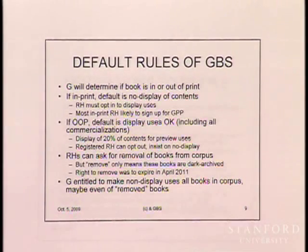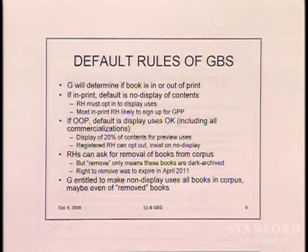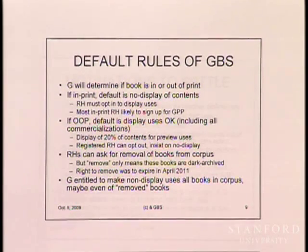The way the system works: Google initially makes a determination about whether a book is in or out of print. If it determines the book is out of print, Google automatically says it has a right to commercialize it under the settlement. If it's in print, the default is no display. Both defaults can be overridden — a rights holder of an out-of-print book can say they don't want their book commercialized, and a rights holder of an in-print, in-copyright book can say go ahead and commercialize it the same way. You can also ask for removal of books from the corpus, but if you look at the definition of 'removal,' it just means the book can't be displayed — it remains in the corpus so that non-display uses can still be made of it.